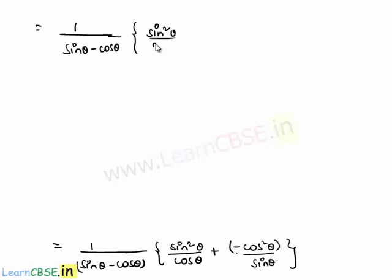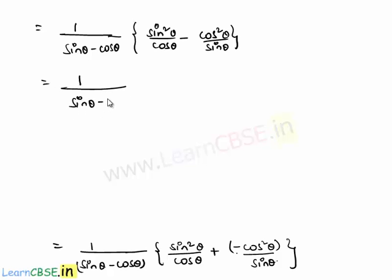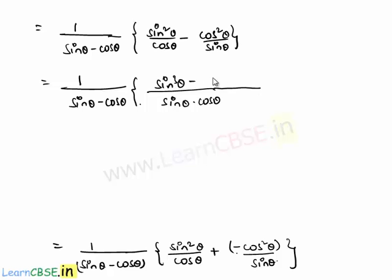That will be equal to 1 by sine theta minus cos theta, into — let us take LCM here — sine theta into cos theta. Then we get sine cubed theta minus cos cubed theta as the numerator, which is equal to 1 by cos theta sine theta, into sine cubed theta minus cos cubed theta, all over sine theta into cos theta, with sine theta minus cos theta in the denominator.